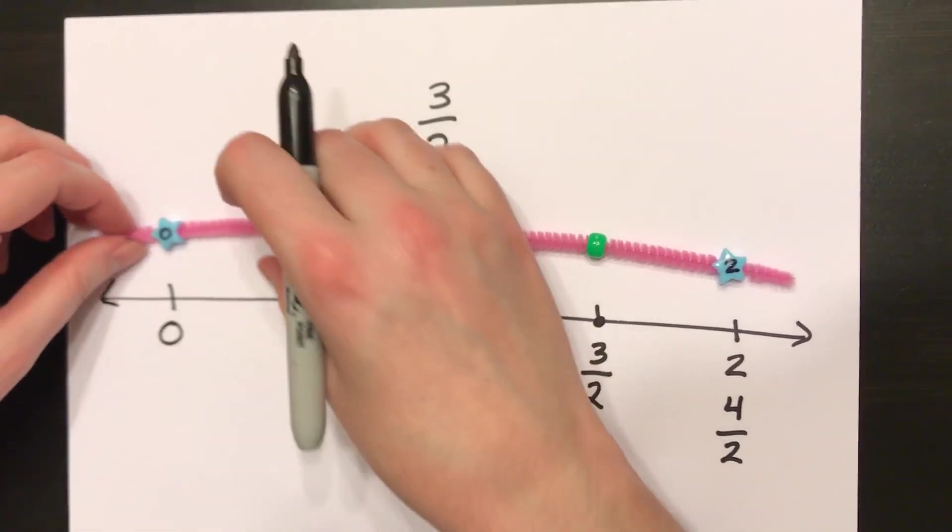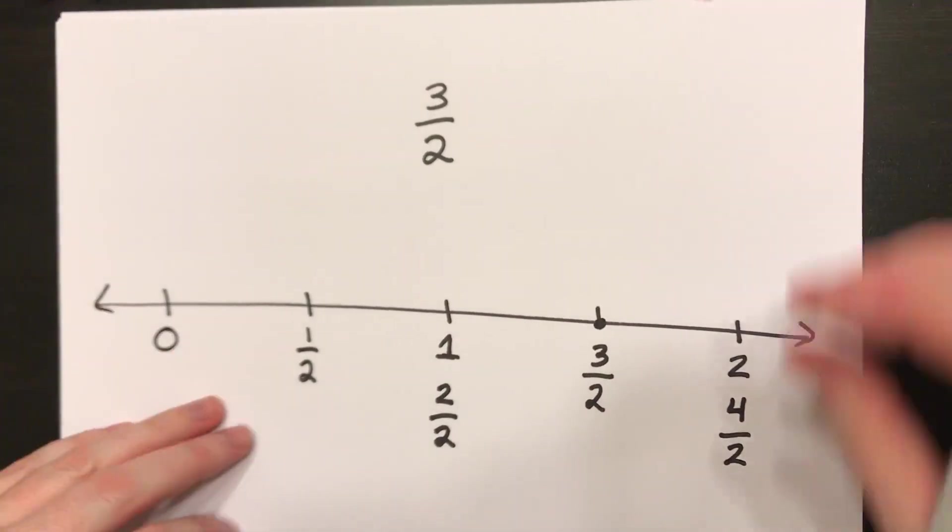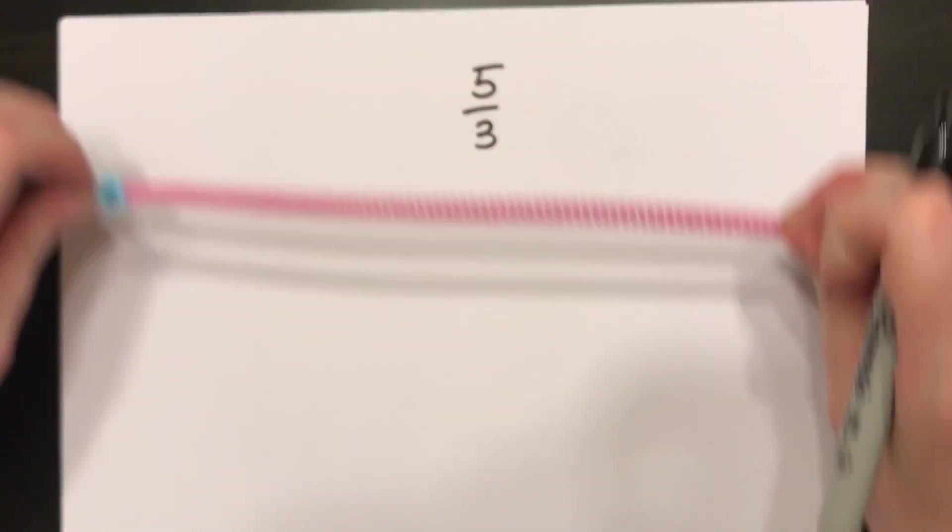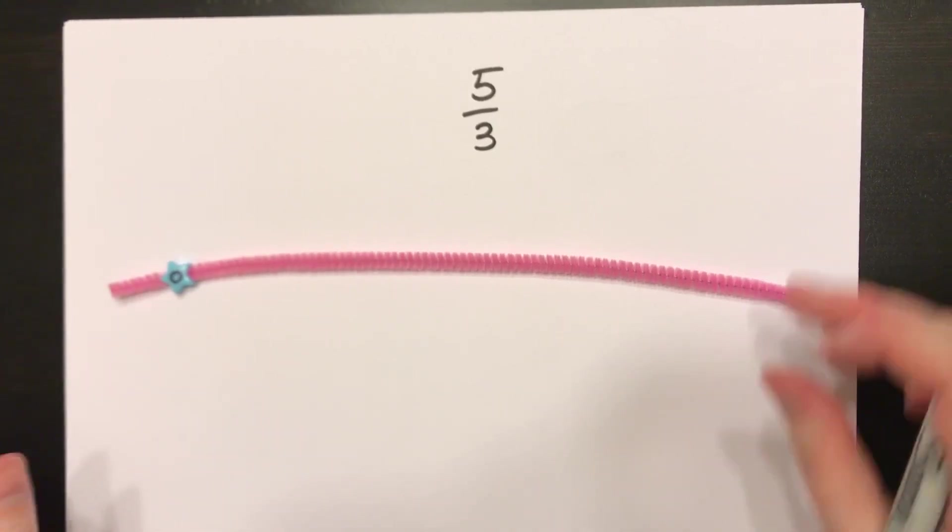Let's give one more try here. Let's say I wanted to find where 5 thirds were on the number line. Take my number line, start with 0.